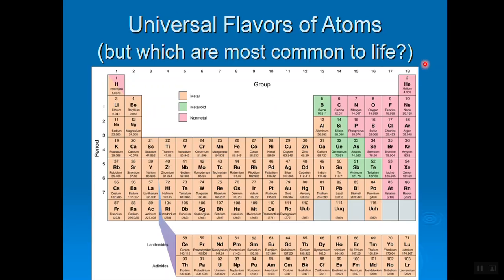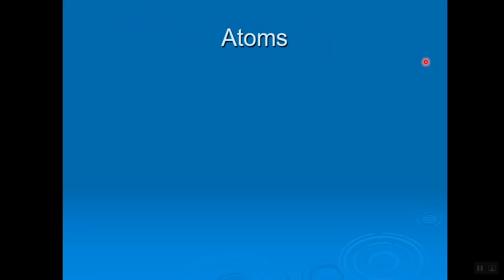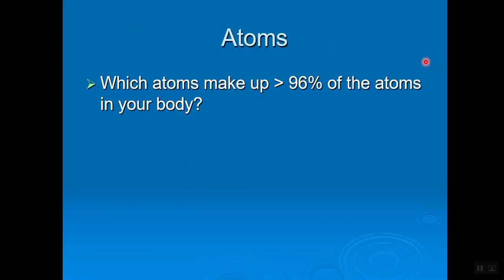There are six which are most common to living things. What atoms make up more than 96% of the atoms in your body or any living organism? We're talking worms, bacteria, fern plants. I like to remember these six types of atoms as CHNOPS.